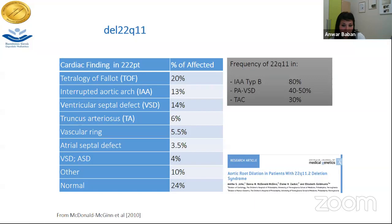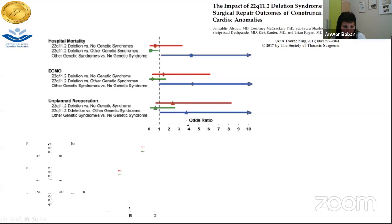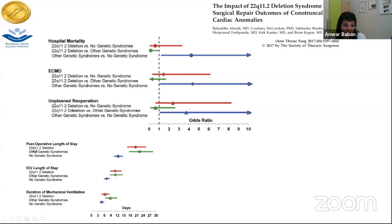A 2017 report shows hospital mortality in patients with other genetic syndromes is higher than non-genetic syndromes, but compared to 22q11, it is almost similar to non-genetic syndrome patients. Patients with genetic syndromes other than 22q11 deletion are more likely to need ECMO or unplanned re-operation. However, the length of post-operative ICU stay for patients with microdeletion 22q11 is higher, though survival is almost similar to those without a genetic condition.